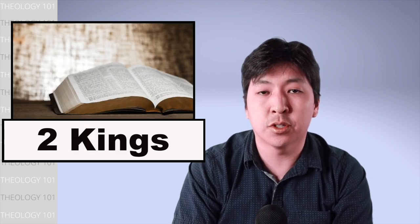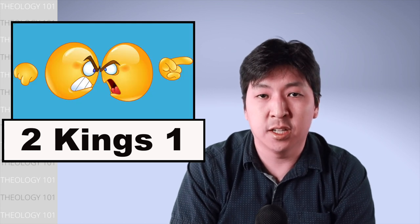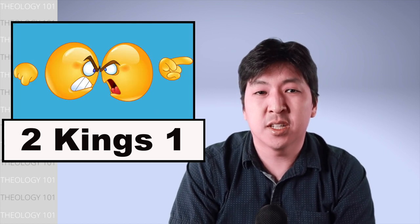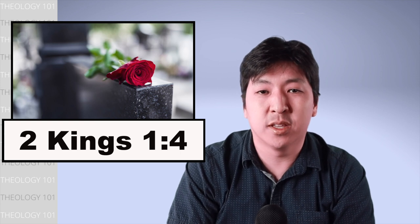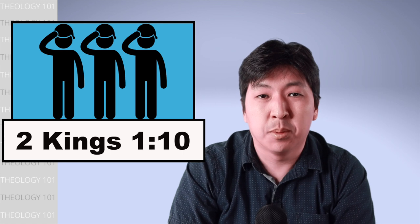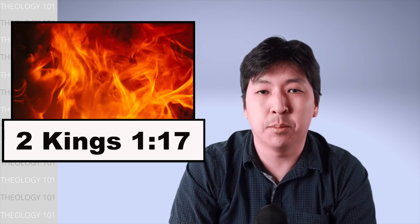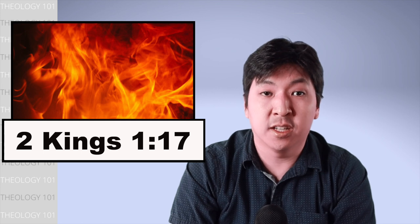So 2 Kings continues the story from 1 Kings and begins with Elijah confronting Ahaziah, the king of Israel. Elijah says that God would judge Ahaziah with death. So Ahaziah sends 50 soldiers to capture Elijah, but they are killed by fire sent from heaven. Ahaziah tries a second time and fails, and eventually Ahaziah dies.